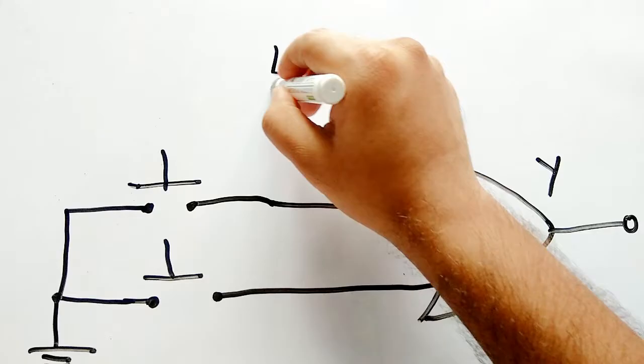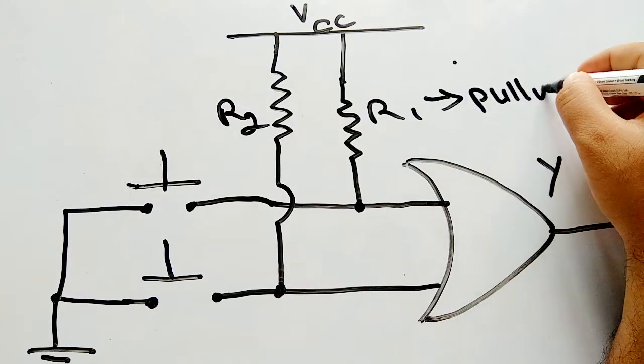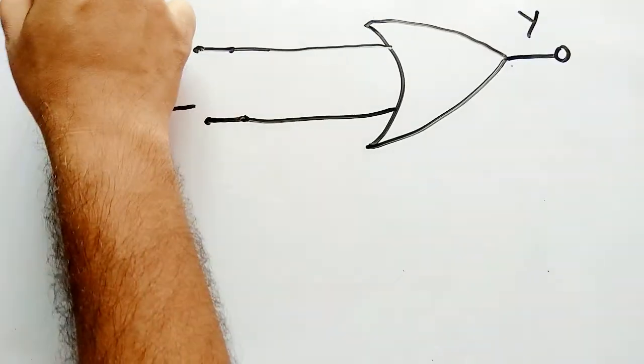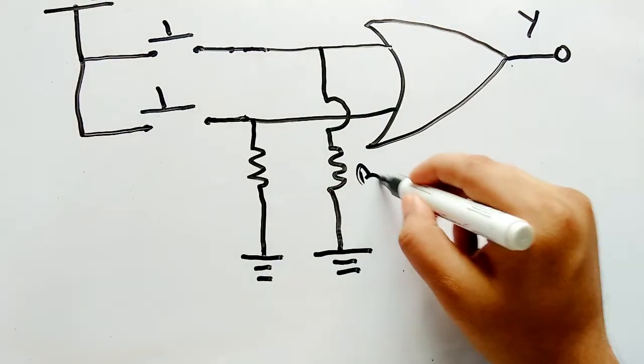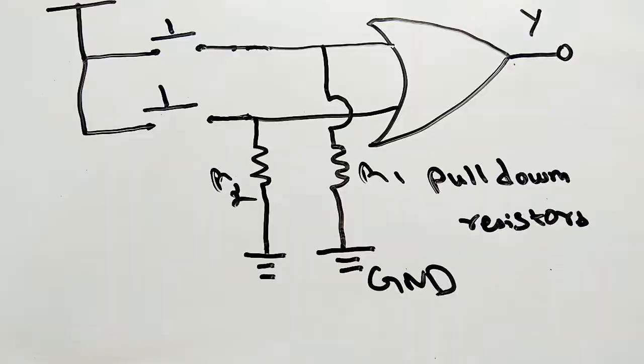Two resistors R1 and R2 are used as pull-up resistors to pull the voltage in the input pins nearly to VCC. Similarly, pull-down resistors pull the voltage level down to ground or zero, and hence they connect from input pins to the ground.